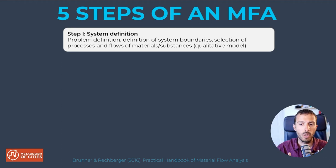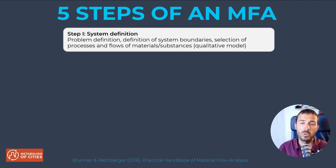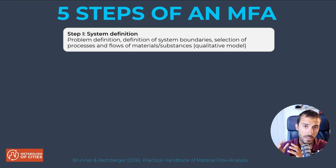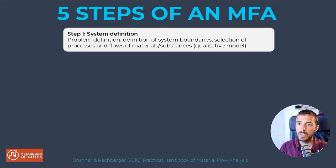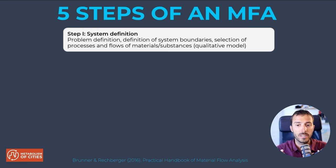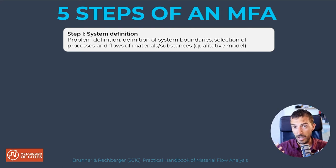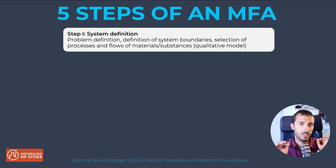Ideally, you want one year for which all your data is aligned. In your system definition you also specify what you count. One study could account for all flows; another might look only at waste; another only at energy flows. You decide which flows and processes are within your accounting exercise and which are without. You can have a black box — just looking at what enters and exits — or a gray box where you know some internal activities, or a fully detailed explicit system.